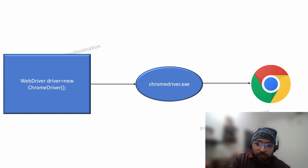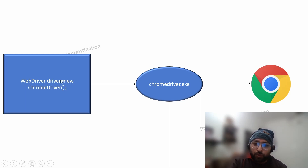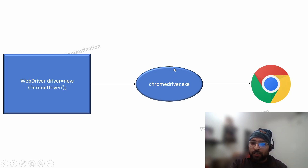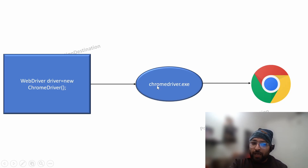When we execute our test cases using Selenium WebDriver, as soon as we write the line of code 'WebDriver driver = new ChromeDriver()', it looks for a driver executable in your system and passes commands to the browser. In simple words, this is an intermediary between the browser and the Java library. If it's not available, we won't be able to execute the test cases, because this is the driving agent through which we trigger and execute test cases.